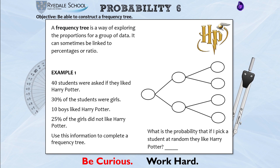We're going to see how this works with our first example. There's quite a bit of reading to do today, so always read these questions really carefully. Example 1: 40 students were asked if they liked Harry Potter. 30% of the students were girls, 10 boys liked Harry Potter, and 25% of the girls did not like Harry Potter. Use this information to complete a frequency tree.